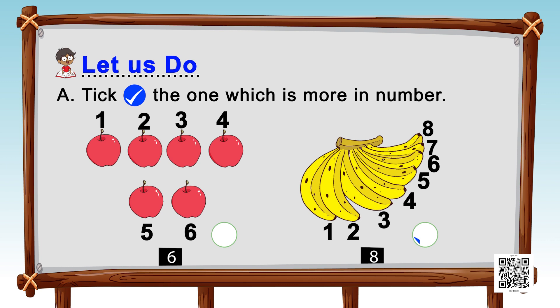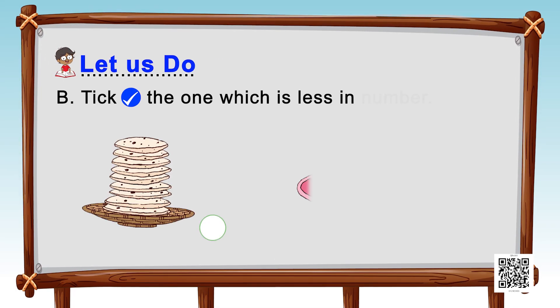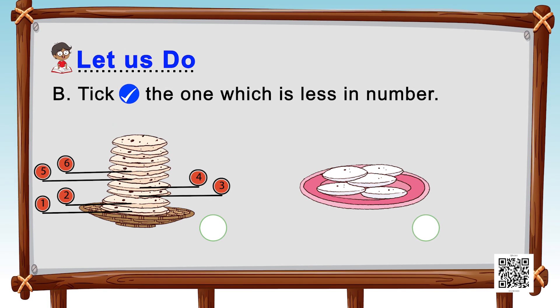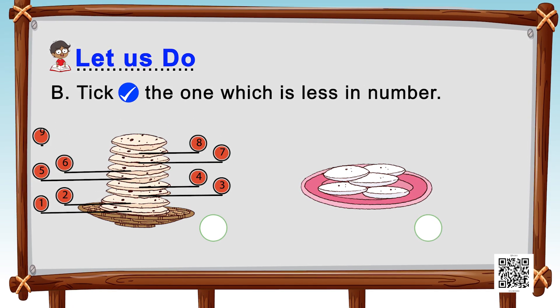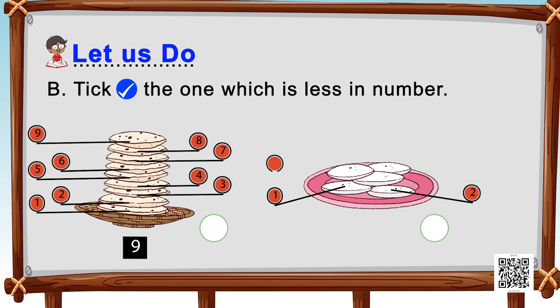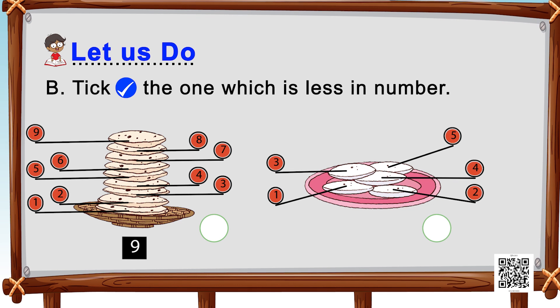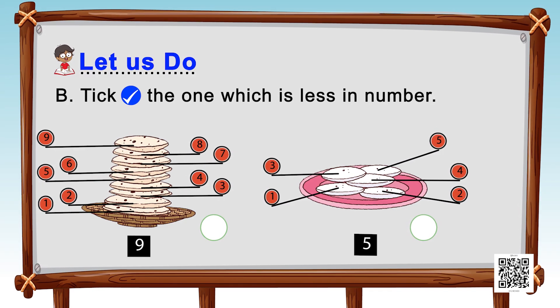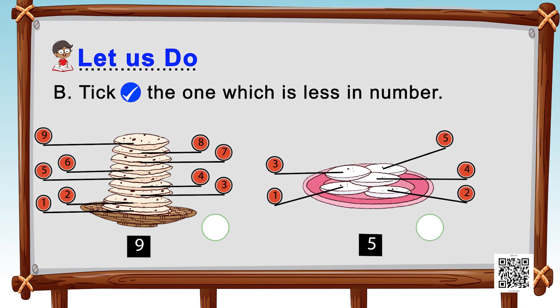Next we have chapatis and idlis. Let's count the chapatis: one, two, three, four, five, six, seven, eight, nine — we have nine chapatis. Now idlis: one, two, three, four, and five — we have five idlis. Here we have to put a tick on the one which is less in number. Is it nine or five? Yes, it is five, so we put a tick on idlis.